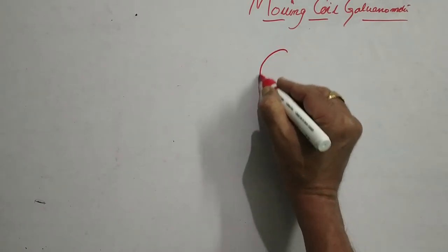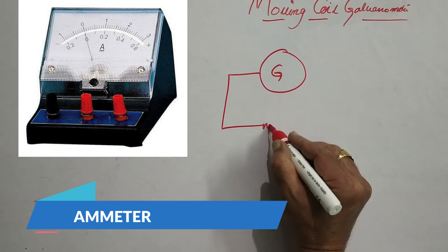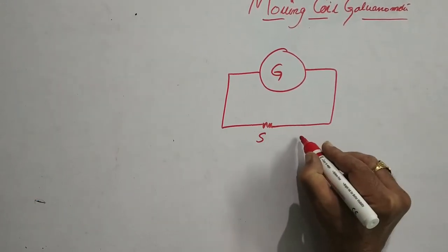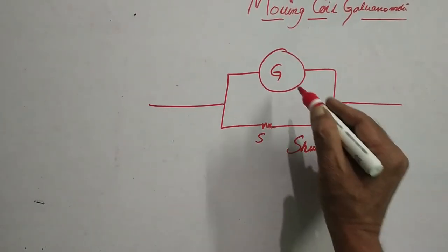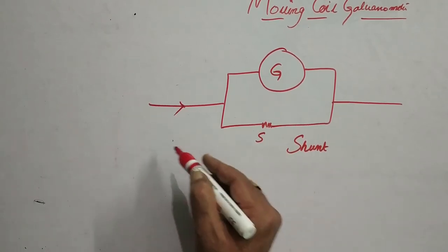To convert the galvanometer into ammeter, you have to attach a very small resistance which is called shunt here and shunt is to be connected in parallel with the galvanometer.